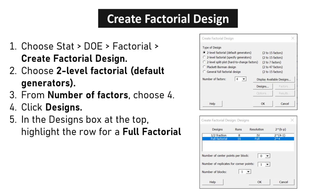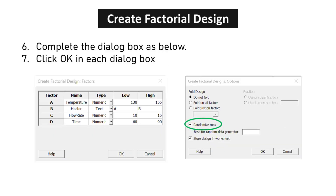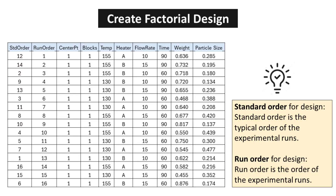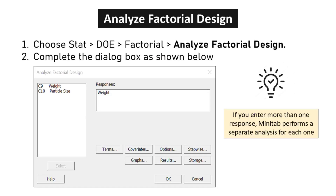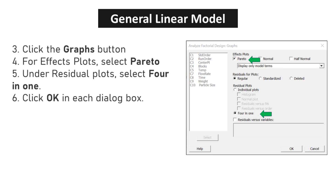Click Designs. In the Designs box at the top, highlight the row for a full factorial. Complete the dialog box as shown and click OK in each dialog box. The table presented displays the outcomes of the design experiment regarding weight and particle size. Standard order is the typical order of the experimental runs; run order is the order the runs were actually performed. Choose STAT > DOE > Factorial > Analyze Factorial Design. Click the Graphs button; for Effects Plots select Pareto, and under Residual Plots select 4-in-1. Click OK in each dialog box.